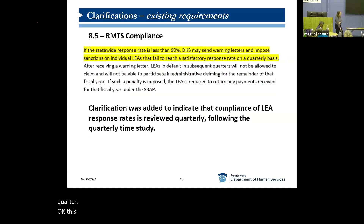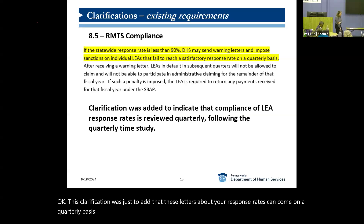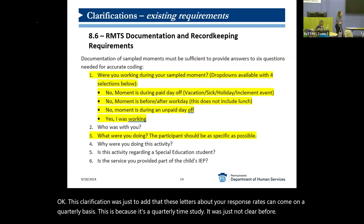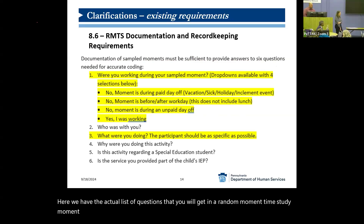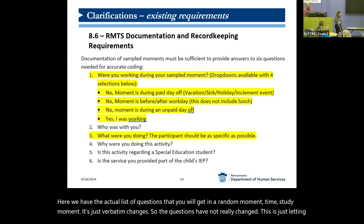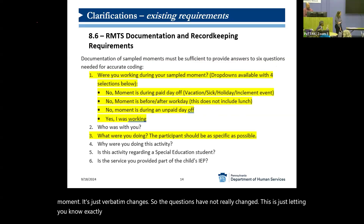This clarification was just to add that letters about your response rates can come on a quarterly basis. This is because it's a quarterly time study — it was just not clear before. We also have the actual list of questions that you will get in a random moment time study. It's just verbatim changes, so the questions have not really changed. This is just letting you know exactly what a participant will see in that moment.